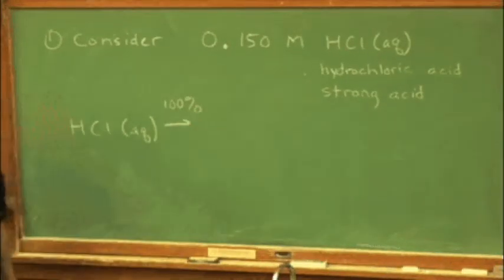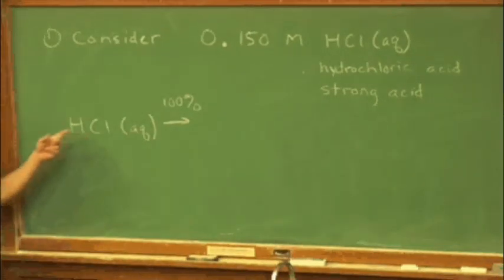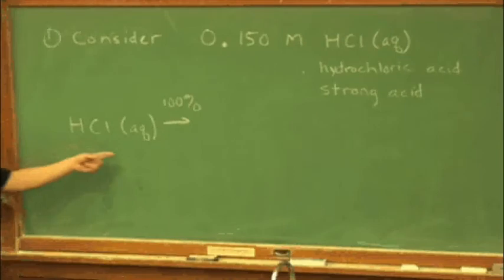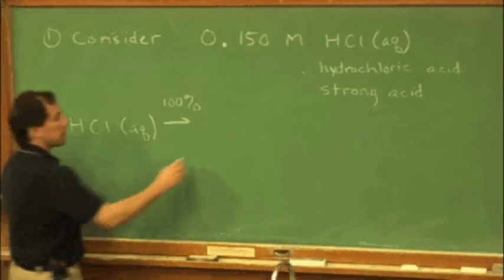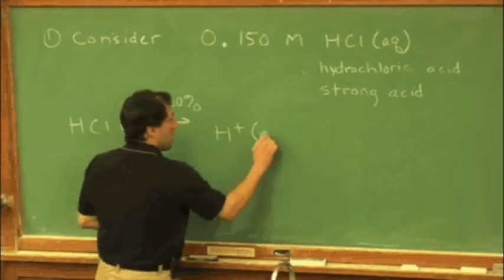HCl is a strong acid, and our definition of a strong acid is, quite frankly, no equilibrium. Hydrochloric acid dissociates 100%, the term dissociate, to bust up. So what we have here is H+ and some chloride.